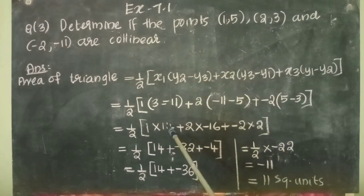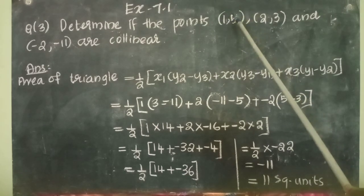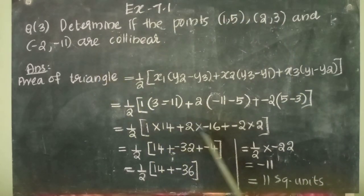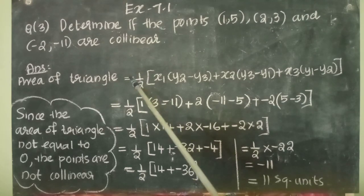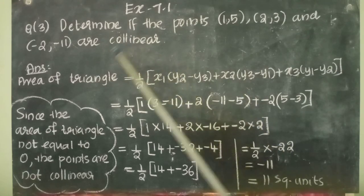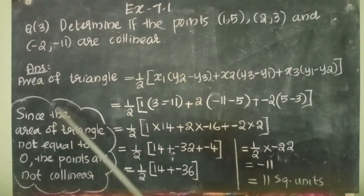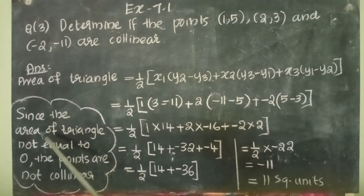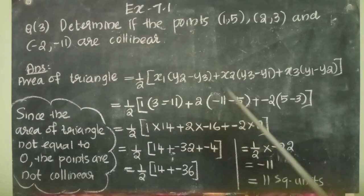So, the area of triangle formed by these 3 points equals 11 square units. Here, the area of triangle is not equal to 0. So, we can conclude since the area of triangle is not equal to 0, the points are not collinear. If we are getting the answer here 0, we will conclude the points are collinear.